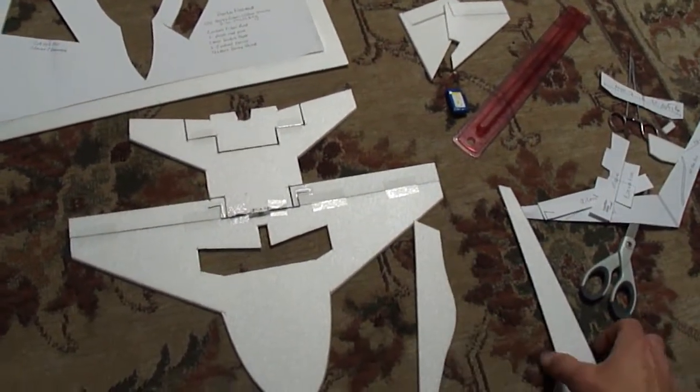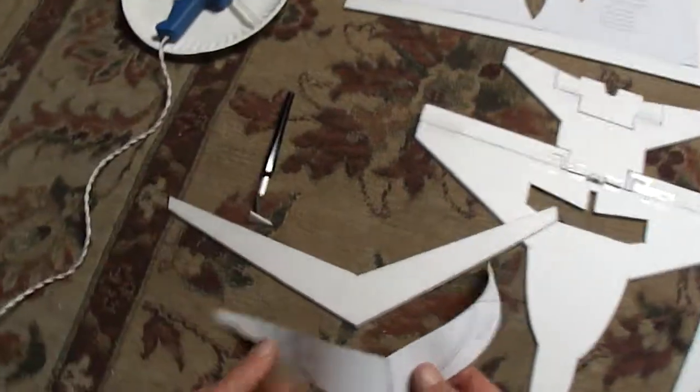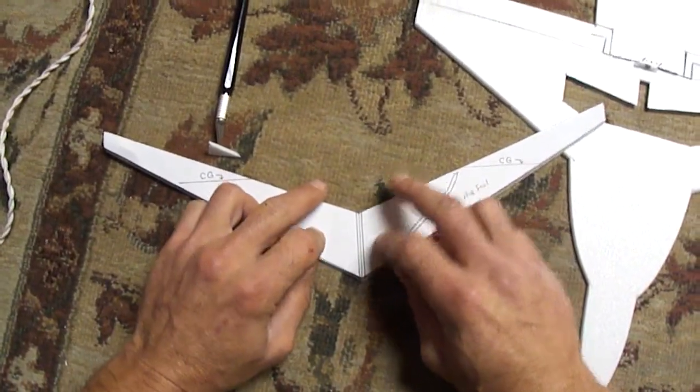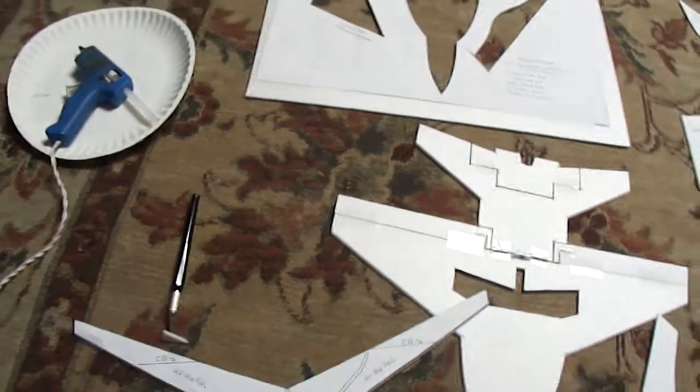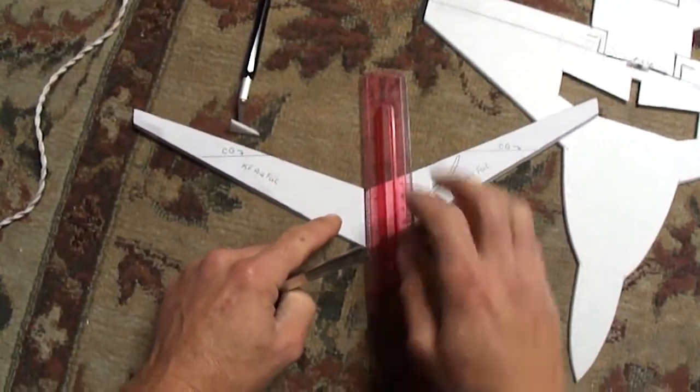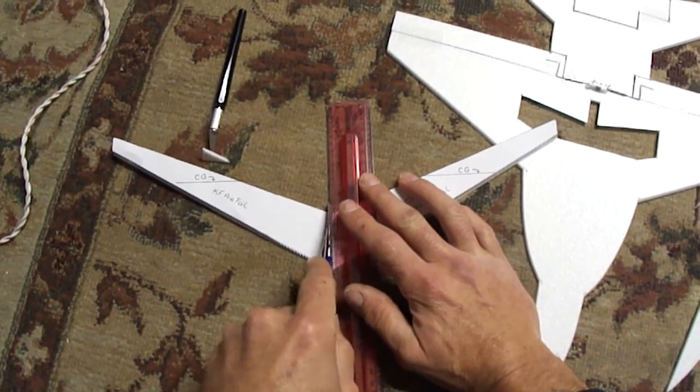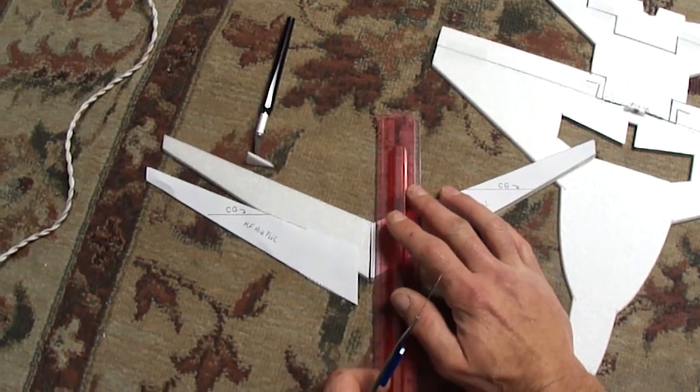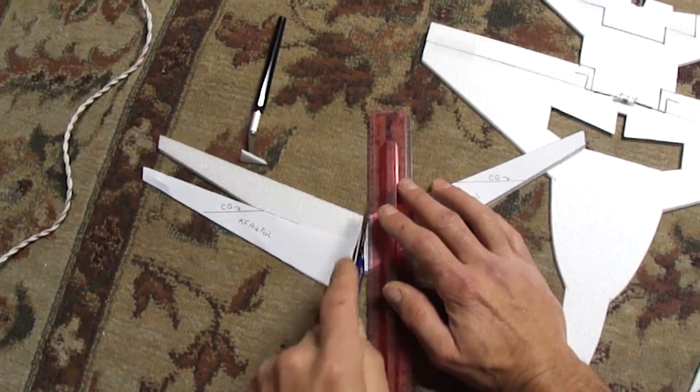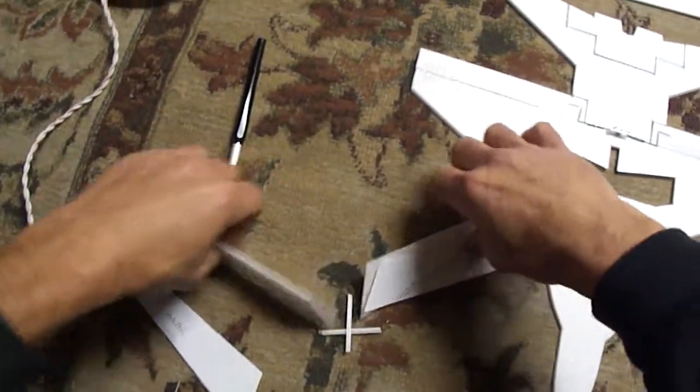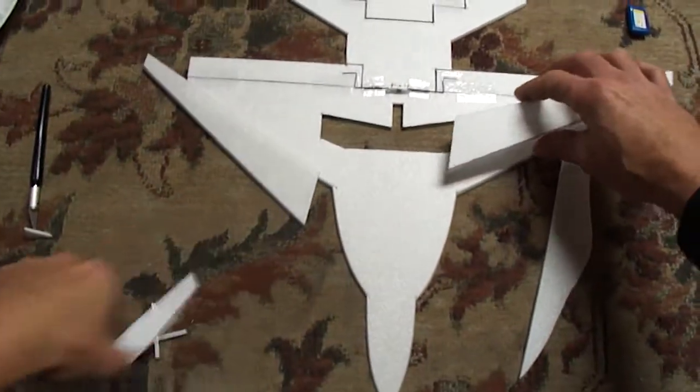So moving on, another next step here. You have to take and trim off the middle piece, your KF airfoil. This is where your fuselot canopy is going to travel through there. Then you've got two pieces of your KF airfoil.